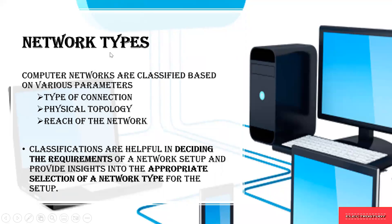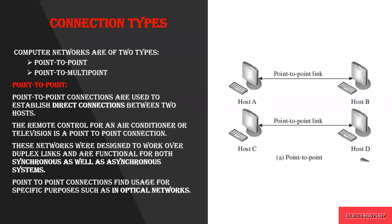Networks are divided into different types based on three parameters: types of connection, physical topology, and reach of the network. Based on requirements, networks are divided into these kinds.